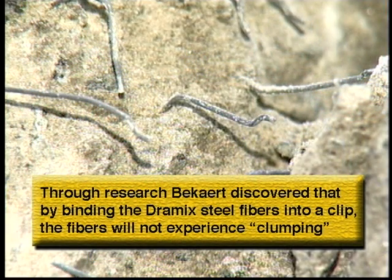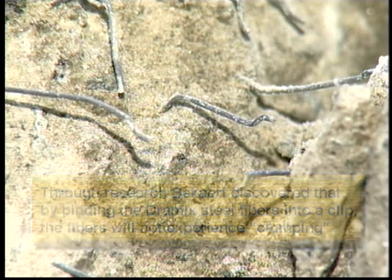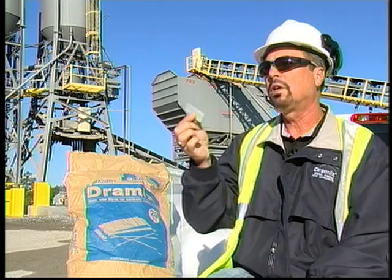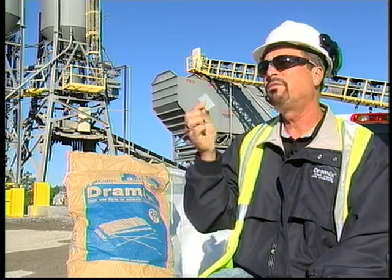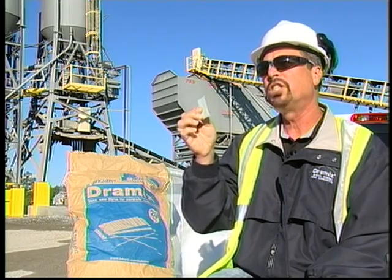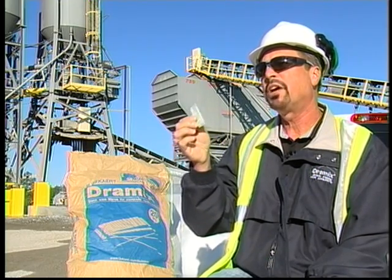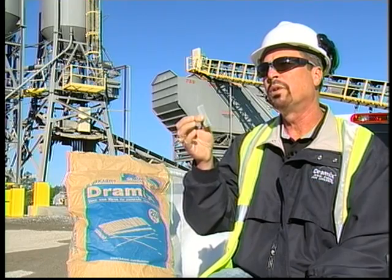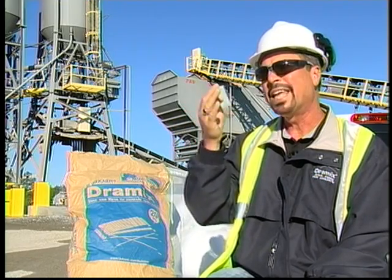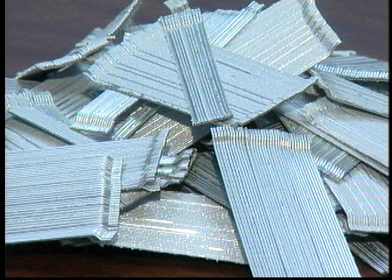By binding the Dramex steel fibers into a clip, Bekaert creates fibers that do not experience clumping. The fibers are in this long clip because this particular fiber has an aspect ratio of 80. Bekaert found out years ago that when the aspect ratio, or length divided by diameter, is over 60, there are balling issues in the concrete.